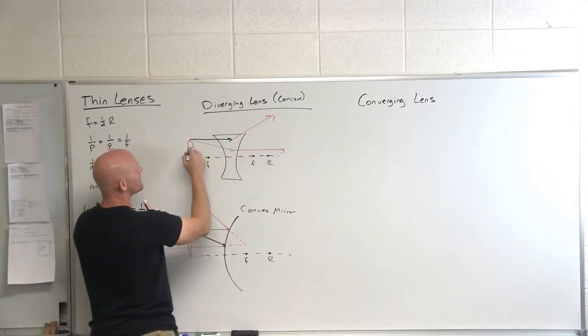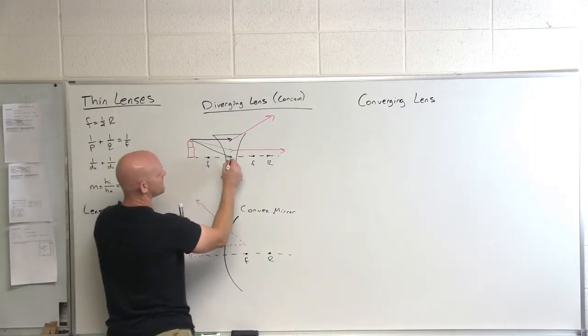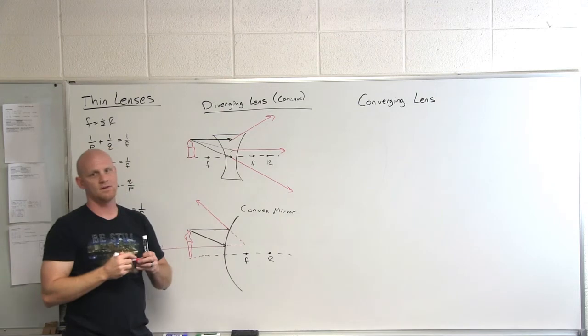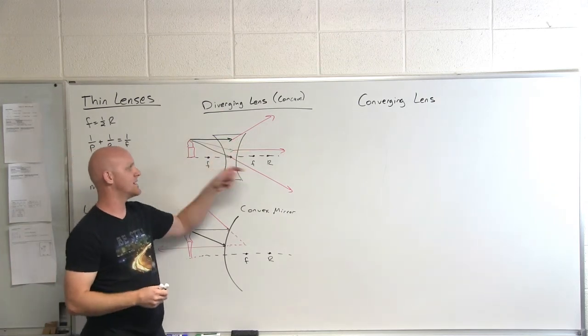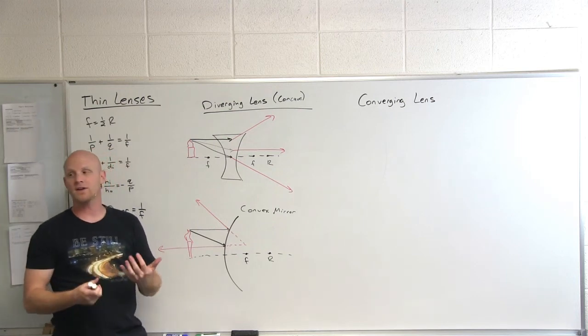And then finally, you could draw another one right to the vertex here. And that one just actually passes straight through all together. And so we've got our three lovely light rays. And are these light rays ever going to converge? No. So we're not going to get a real image.